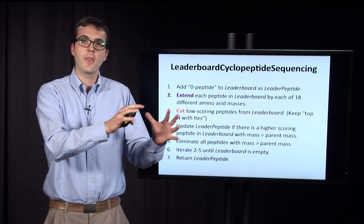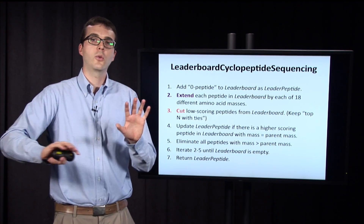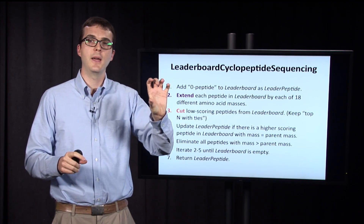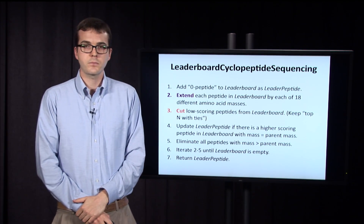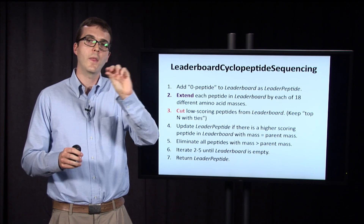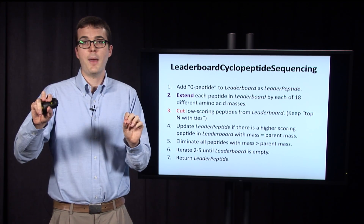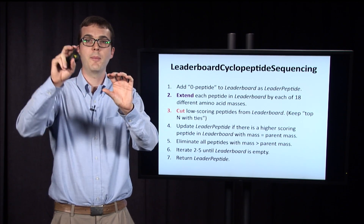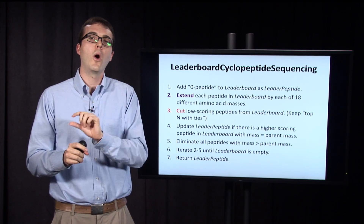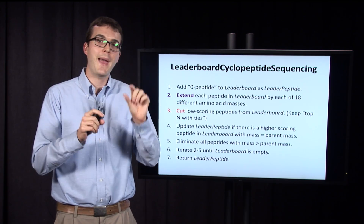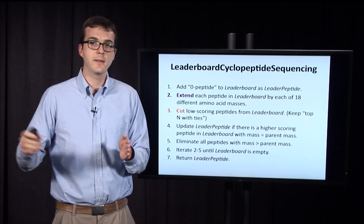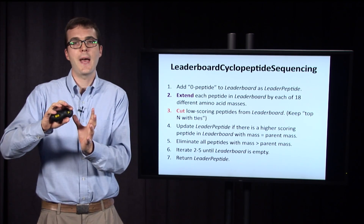We assign everything a score, see what the score of every peptide is, and then cut the low-scoring ones — removing them so that the number of solutions we consider doesn't grow, keeping only the high-scoring peptides. We keep the top-N peptides with ties. Then the next step updates the leader peptide — we track what the best peptide should be. If there is a higher-scoring peptide on the leaderboard whose mass equals the parent mass we can detect, that becomes our new leader.